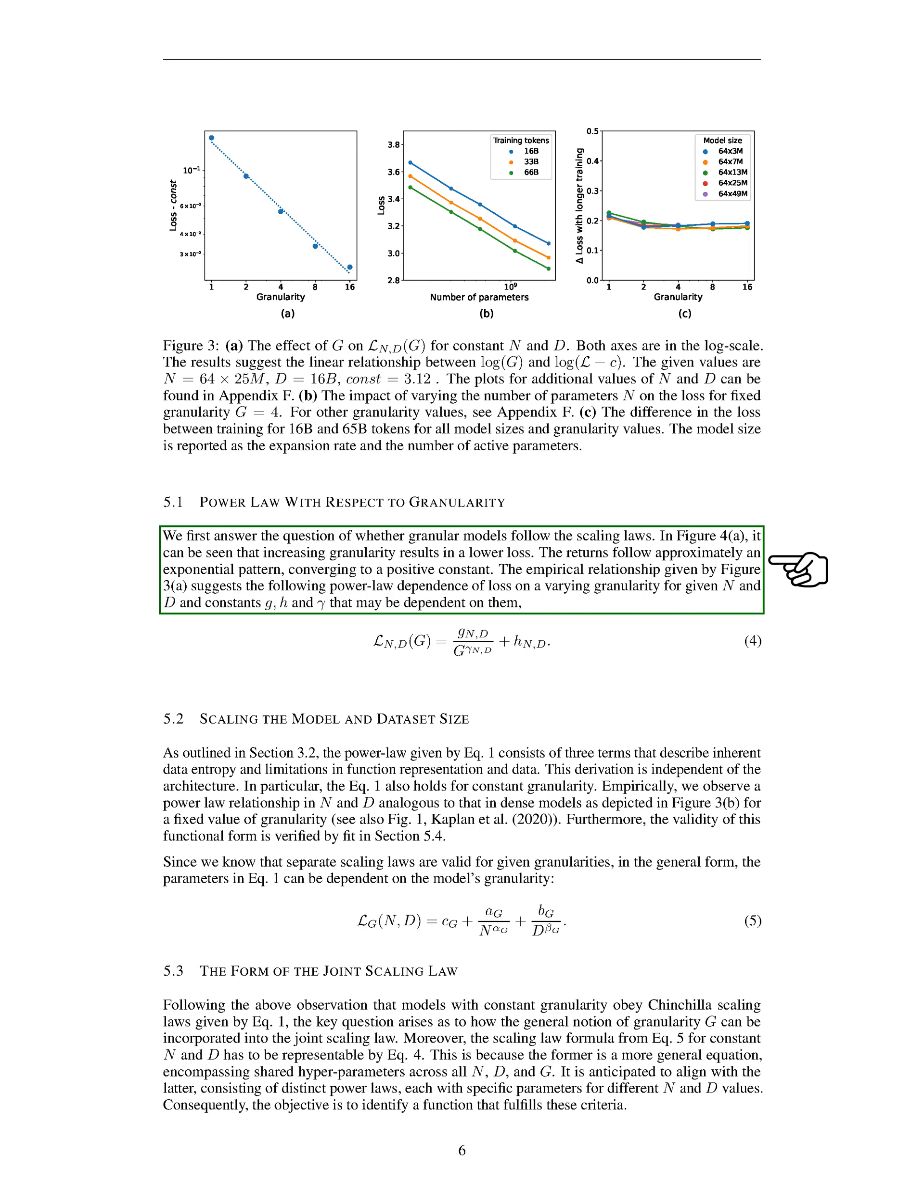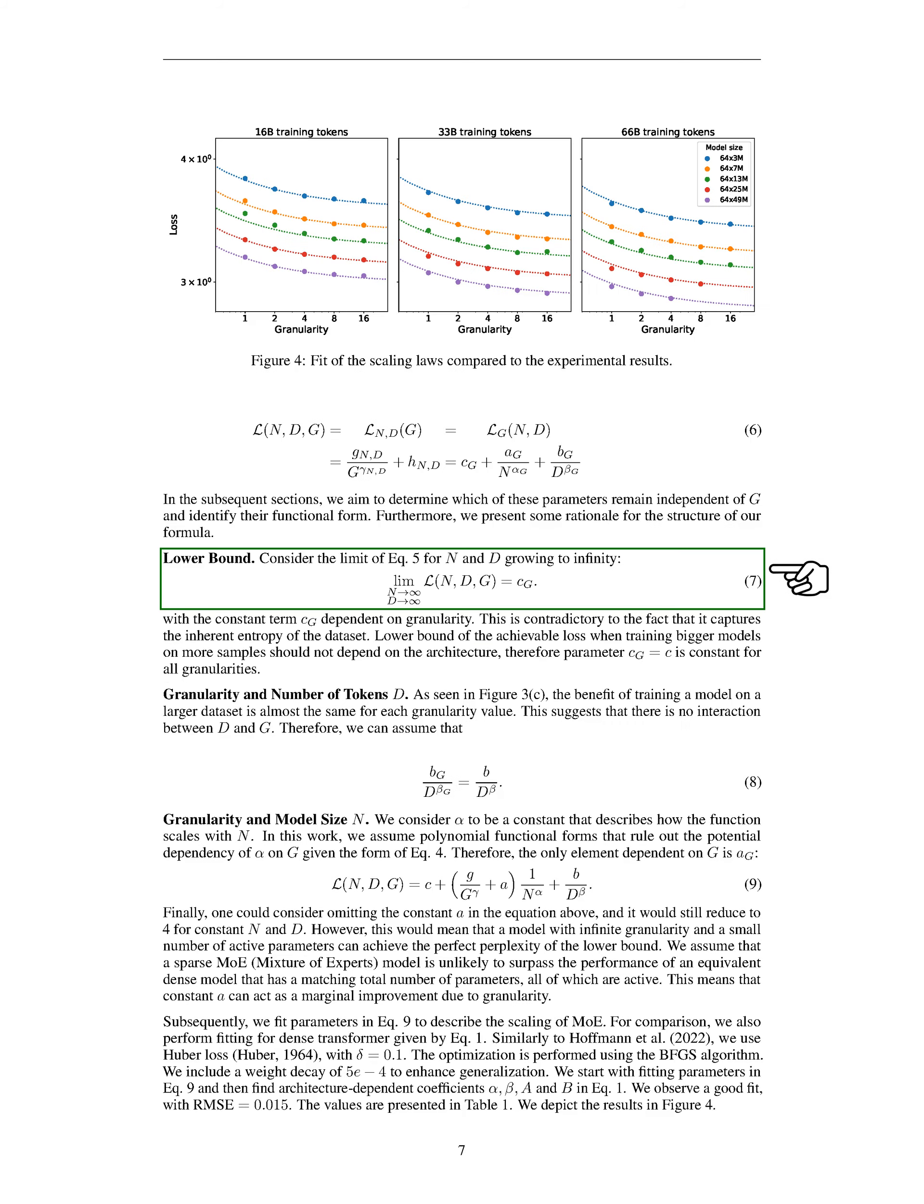Even when we keep the level of detail constant, we see a similar pattern of scaling in both the model size and the dataset size, which is consistent with what we've observed in more densely built models. A particularly interesting point we explore is how the concept of granularity fits into the broader scaling laws we observe. We aim to integrate granularity into these laws in a way that makes sense across different model sizes and dataset sizes. Our goal is to find a mathematical function that can accurately describe this relationship, taking into account that some parameters might not change with different levels of detail. We also consider the lowest possible error rate we can achieve as we make our models bigger and train them with more data. Interestingly, this lower limit doesn't seem to depend on how detailed our models are, suggesting that the fundamental challenges in learning from data are consistent across different levels of granularity.